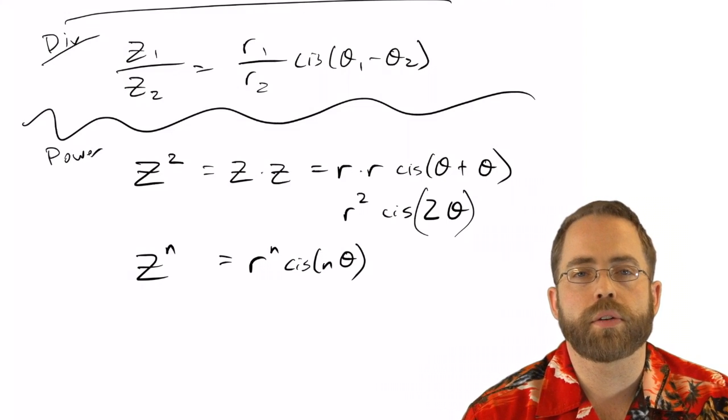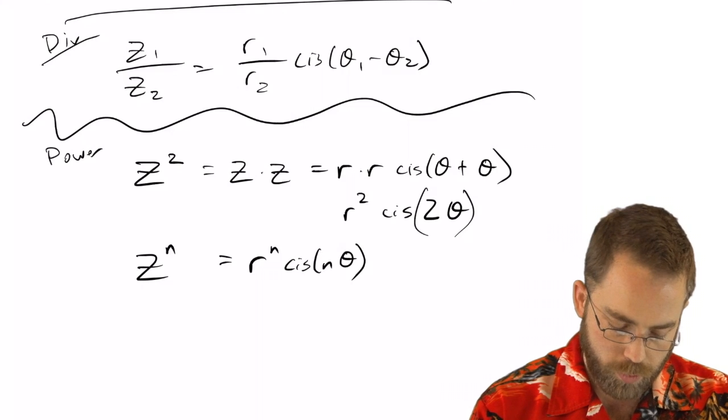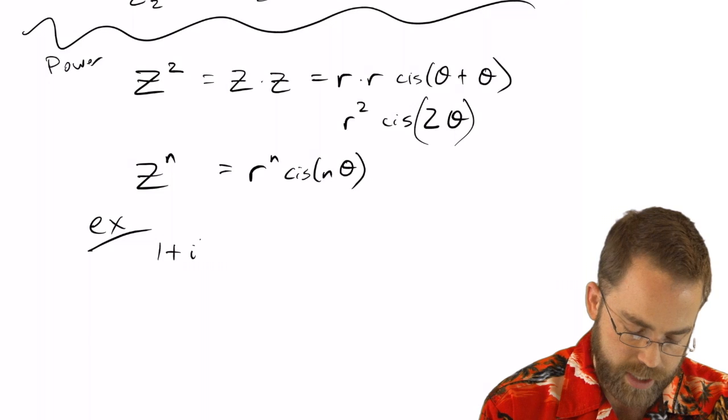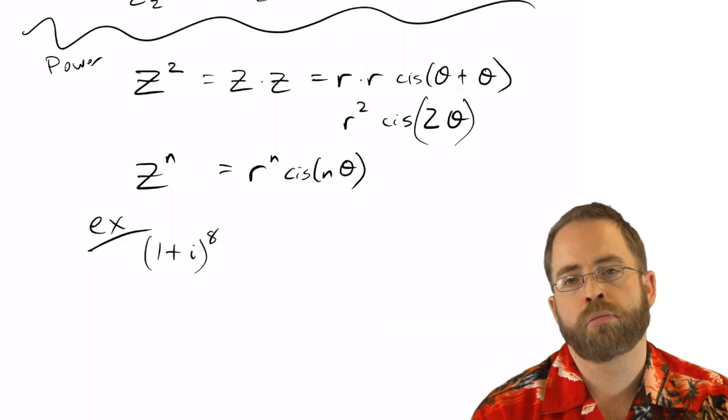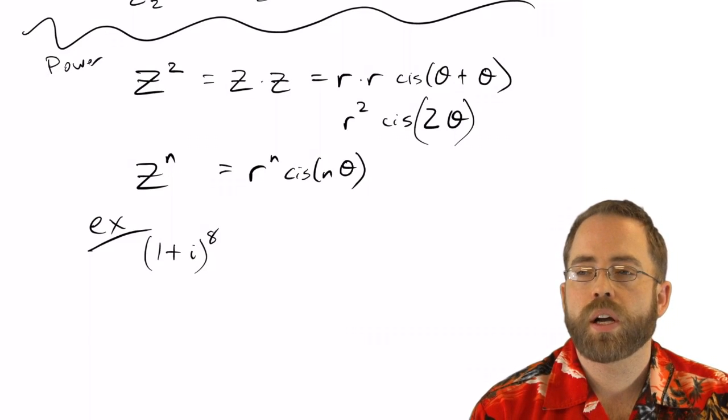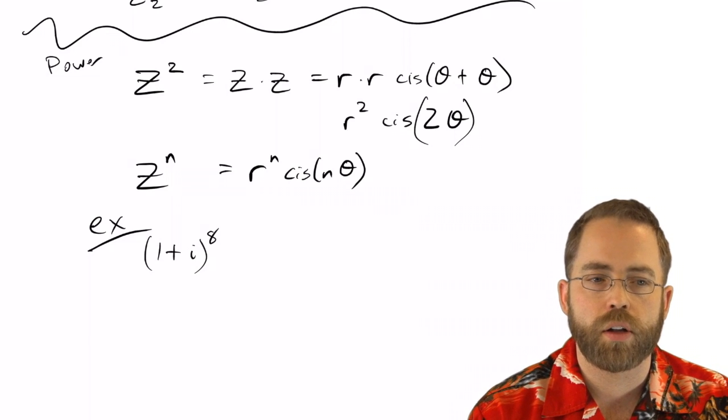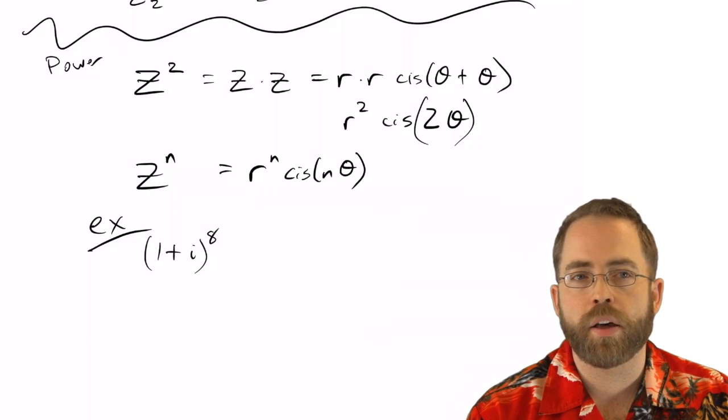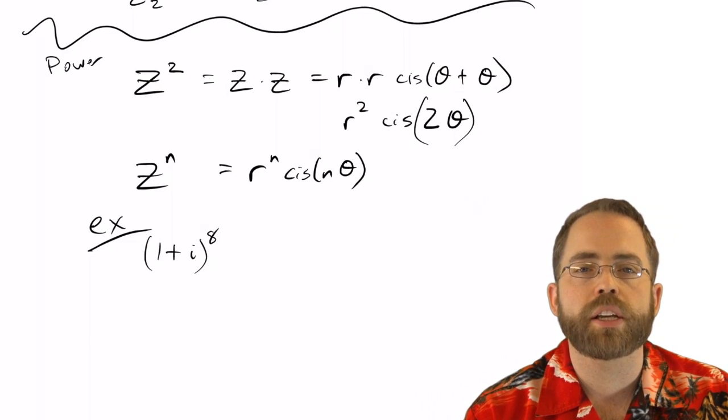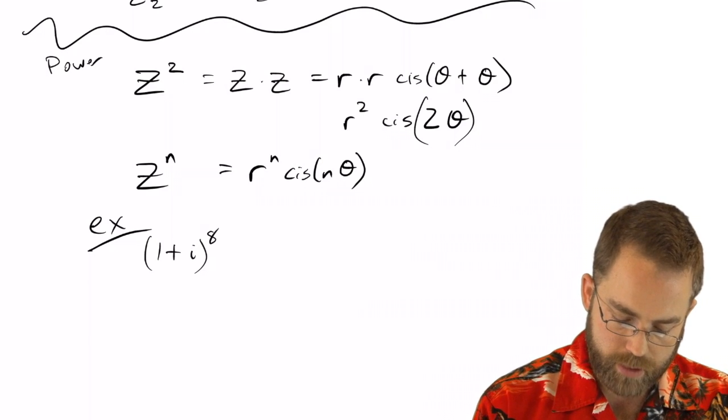Now, you may think to yourself, well, who cares about that? That's not anything wonderful. Well, watch this example. If I asked you to do 1 plus i to the 8th, you would look at that and you'd say, that's going to take me forever. I've got to do 1 plus i times 1 plus i and then foil that all out and then multiply in another 1 plus i and another 1 plus i and just on and on and on. It would take you a long, long time to multiply it by itself eight times.